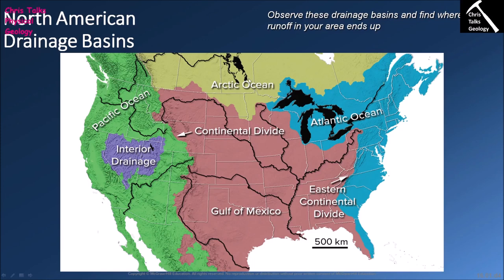In northern Canada, any liquid water flows into the Arctic Ocean — that's the Arctic Ocean Drainage Network. The blue area is where water moves through the drainage network to be deposited into the Atlantic, forming the Atlantic Ocean Drainage Network. On the eastern side, the Continental Divide separates the Pacific from the Gulf of Mexico drainage networks, while the Eastern Continental Divide — formed by the Appalachians — separates the Gulf of Mexico drainage network on the west side from the Atlantic Ocean Drainage Network on the east side.